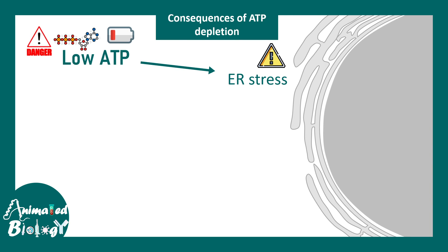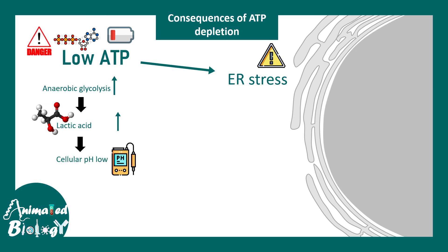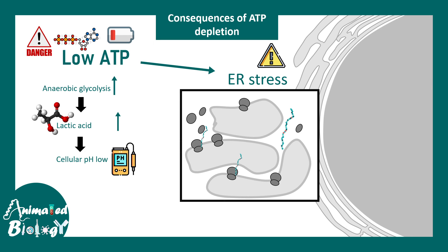Low ATP can also cause ER stress and lead to dysregulation of metabolism. Anaerobic glycolysis would be increased, producing large amounts of lactic acid, so cellular pH would drop. This further aggravates the ER stress. The ribosomes present on the ER would detach, and protein synthesis would be reduced. There are many adverse causes and consequences of ATP depletion.